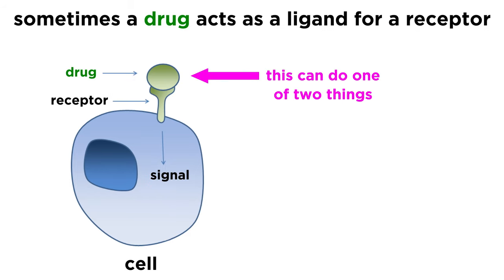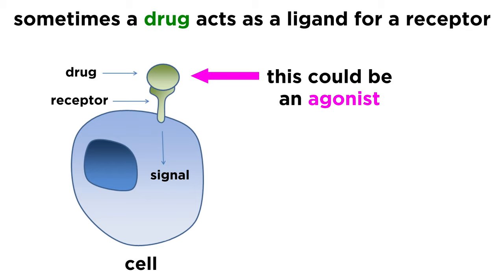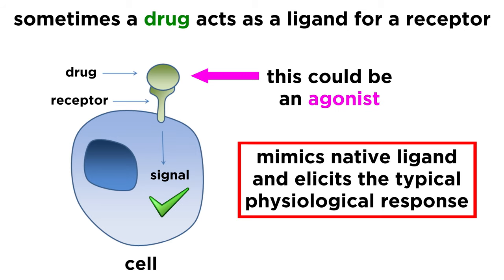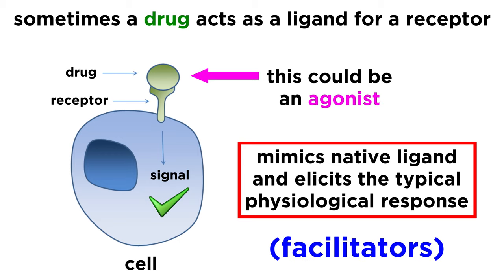When drugs interact with receptors, there are two main ways that this could go. A drug could be an agonist for a particular receptor, meaning that it fits into the active site and mimics the native ligand, eliciting the typical physiological response. We can call these facilitators.